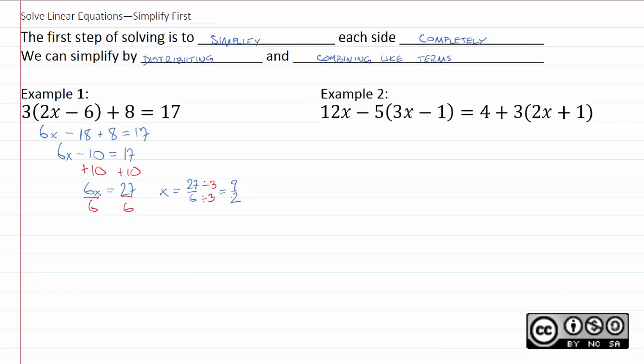Example 2 works exactly the same way. There's just a little more to it. So we begin again with the distributive property. 12x minus 15x. Now, remember negative 5 times negative 1 is positive 5 equals 4. 3 times 2x is 6x. 3 times 1 is 3.